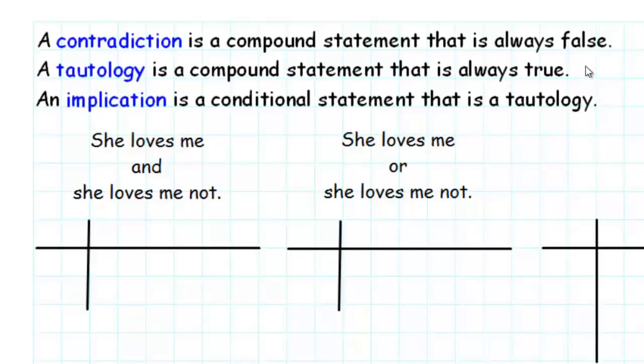A contradiction is a compound statement that is always false, and a tautology is a compound statement that is always true.